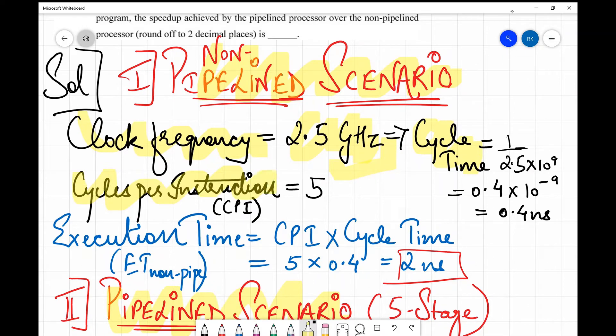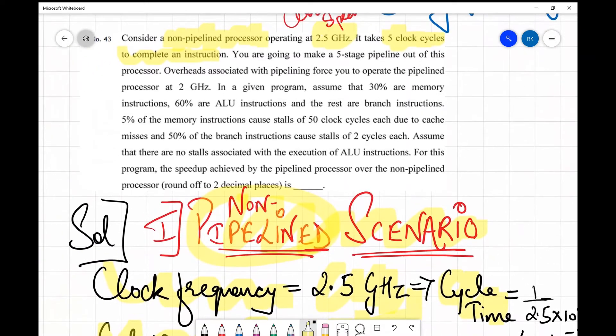It was given that there are 5 clock cycles per instruction, so CPI is 5. Then the execution time - the formula for execution time in case of a non-pipeline scenario is CPI × cycle time. Number of cycles per instruction are 5 and the time to execute one cycle is 0.4, so the entire execution time is 5 × 0.4 which is 2 nanoseconds.